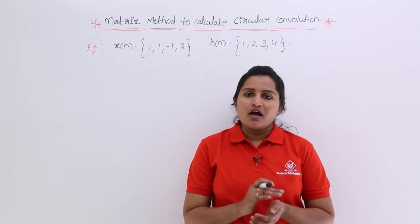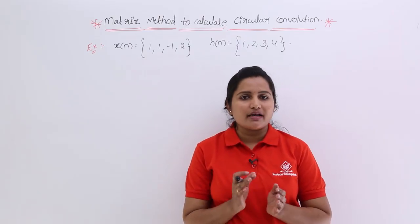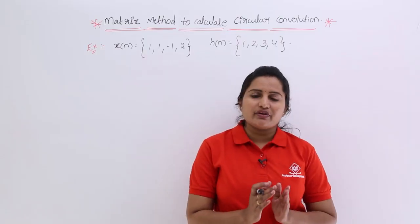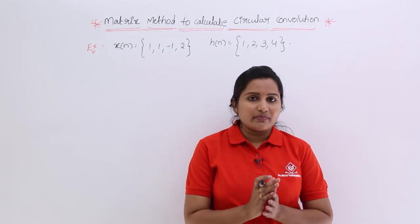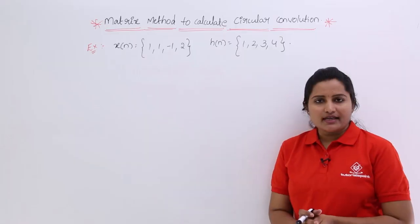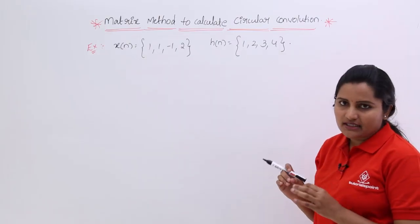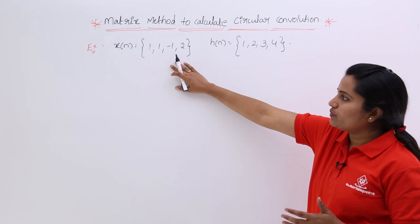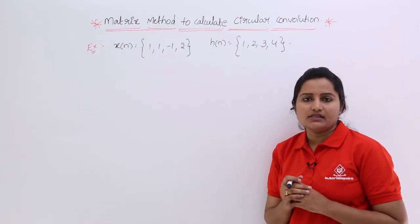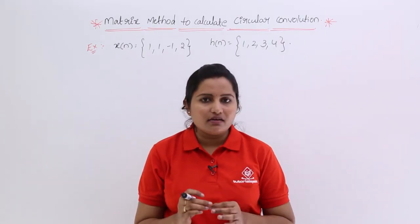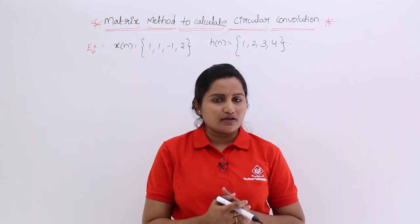In this video I will show you how to calculate circular convolution using the matrix method. Earlier in the last class we discussed circular convolution by the sum-by-column method. Here I am presenting another method — the matrix method to calculate circular convolution. I consider two signals: x(n) = {1, 1, -1, 2} and h(n) = {1, 2, 3, 4}, and I want to convolute these using circular convolution.